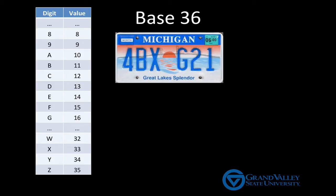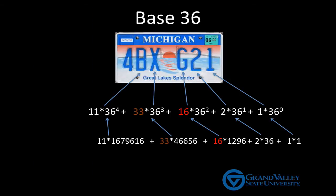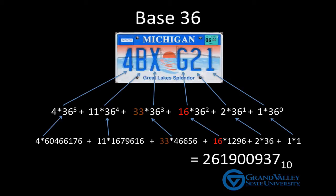Thus, 4BXG21 base 36 means 1 times 36 to the 0 power plus 2 times 36 to the first power plus 16 times 36 squared. Notice we're using G to represent a group of 16, plus 33 times 36 cubed plus 11 times 36 to the fourth power plus 4 times 36 to the fifth power. I've already expanded the powers of 36 and when we add this up, we see that 4BXG21 base 36 is 261,900,937.